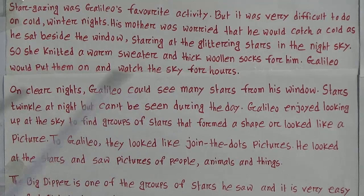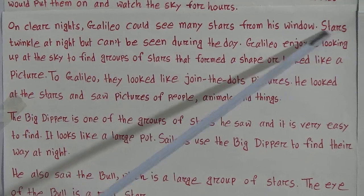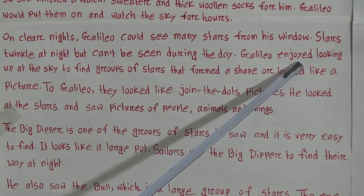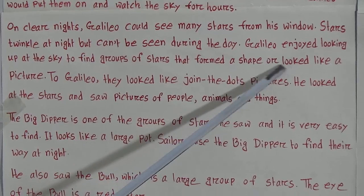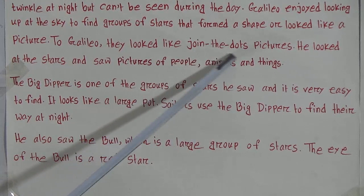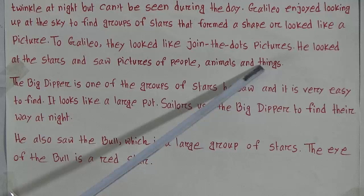On clear nights, Galileo could see many stars from his window. Stars twinkle at night but can't be seen during the day. Galileo enjoyed looking up at the sky to find groups of stars that formed a shape or looked like a picture. To Galileo they looked like join-the-dots pictures — he saw pictures of people, animals, and things.